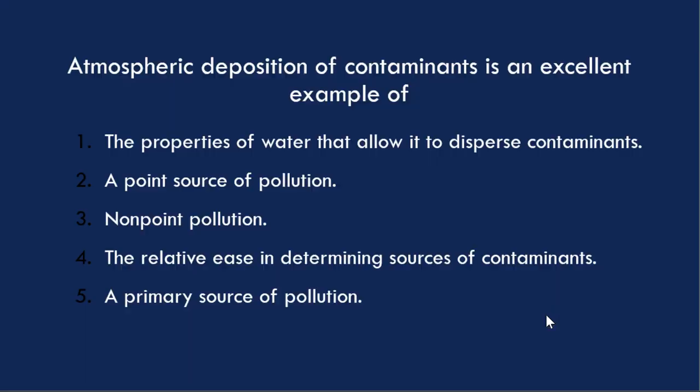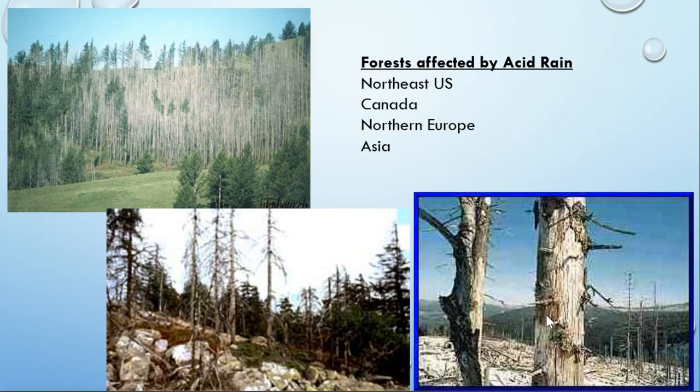Atmospheric deposition of contaminants is an excellent example of a non-point source of pollution. Acid rain is a non-point pollution source because it just falls out of the atmosphere — it's very hard to tell where the source is, but it is definitely really damaging. Here are some pictures of forests affected by acid rain, which lowers the pH and is outside the range of tolerance due to acidification of the soil.